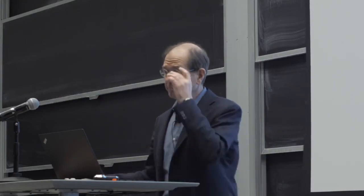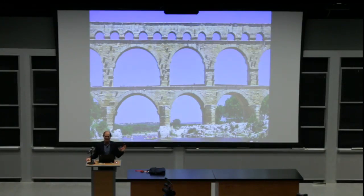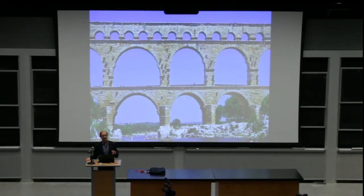Algorand is, to me, a unique foundational blockchain developed from first principles, with a deep roadmap of innovation. I'll leave you with this image: the Julien Bridge in southern France, which spanned the Gallo river for over two thousand years and was never repaired for hundreds of years — it used to carry trucks and cars until someone decided only pedestrians should be allowed. That is an example of very basic infrastructure that allowed people to find each other and cross. I believe the blockchain, properly constructed, will be as useful and as beautiful as any physical infrastructure we have ever built. Let's build it properly. Thank you.